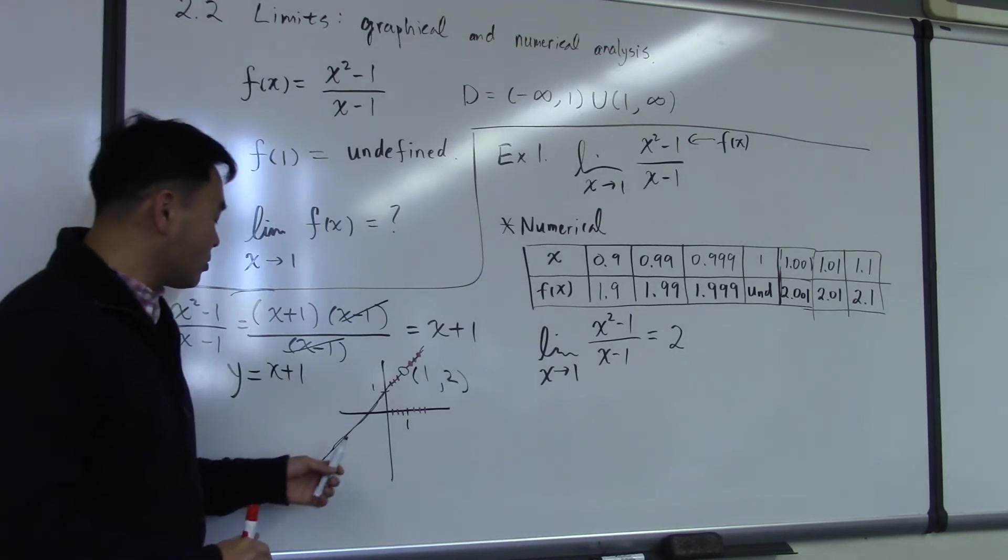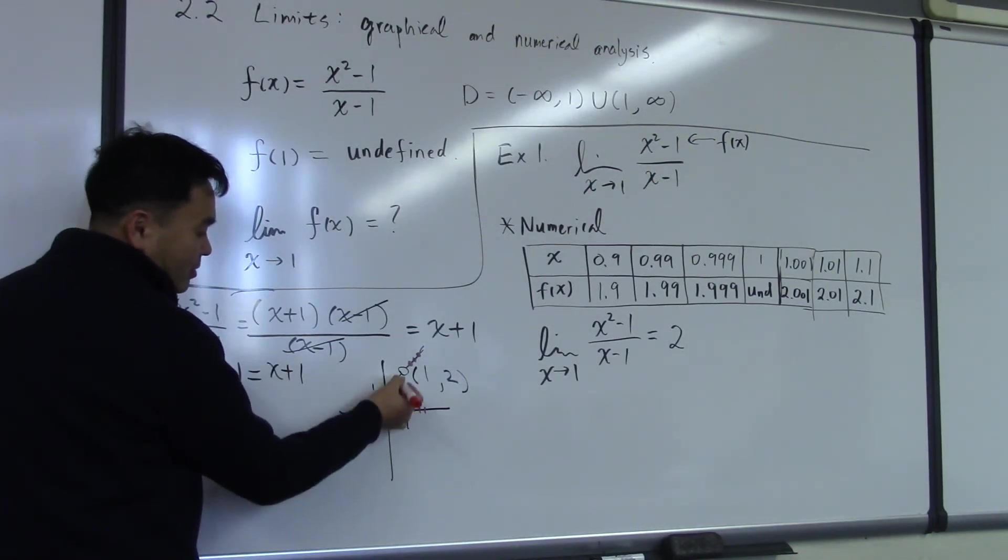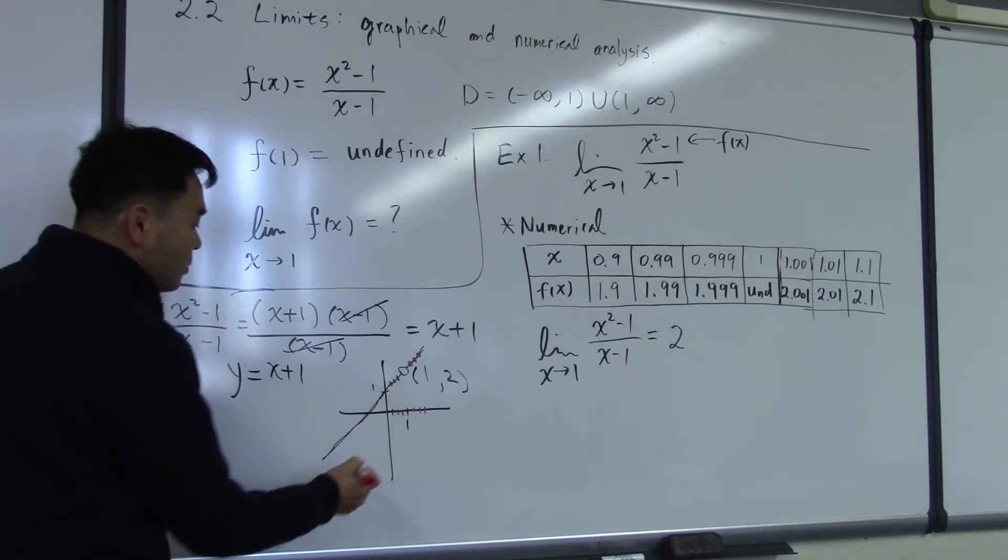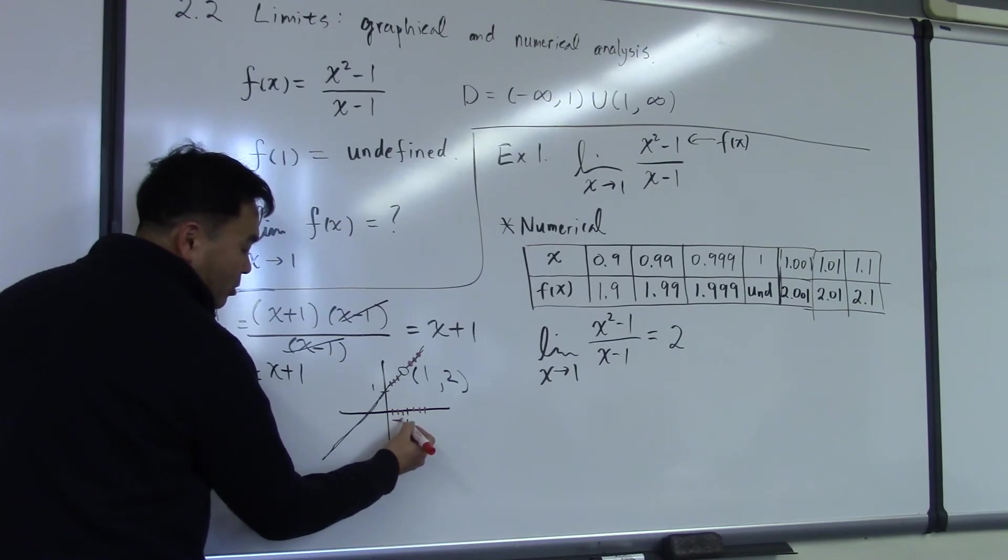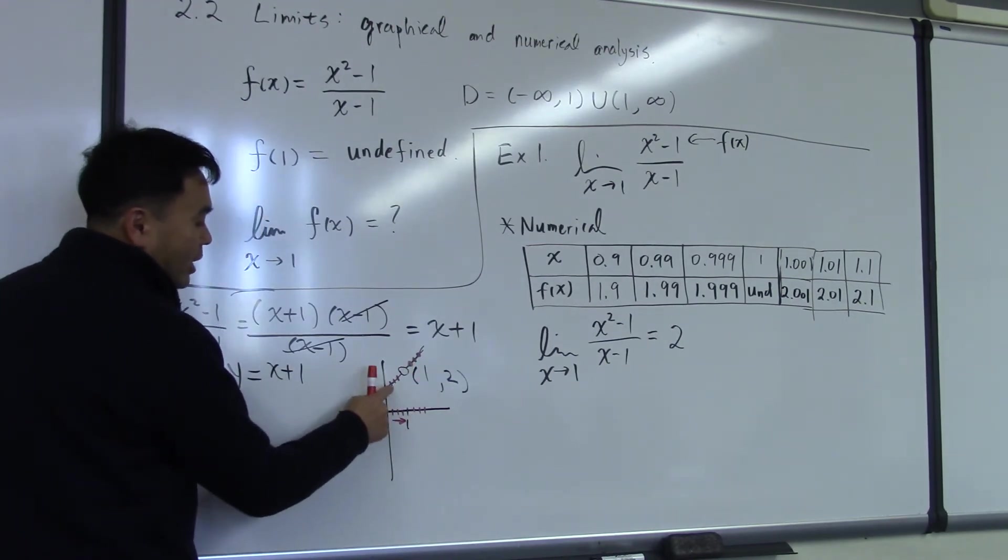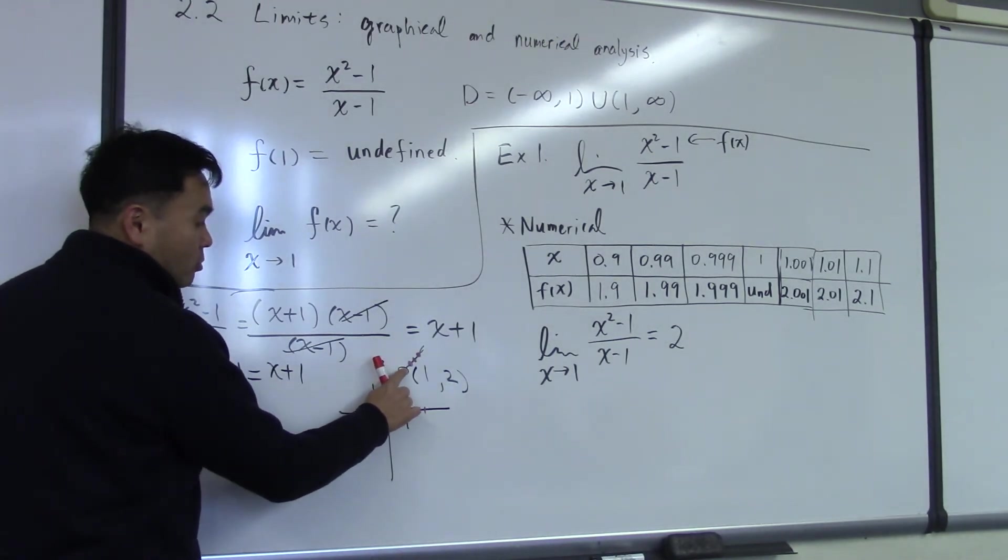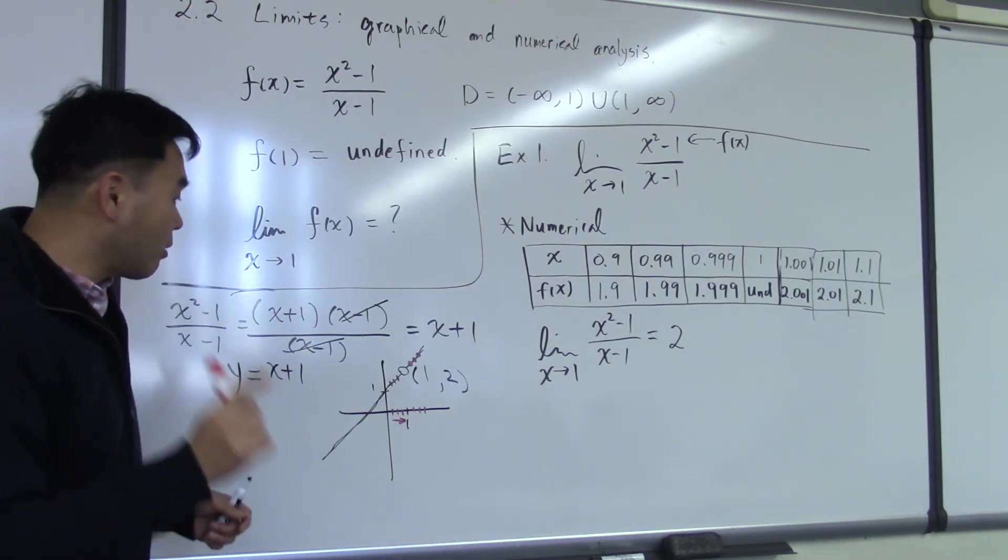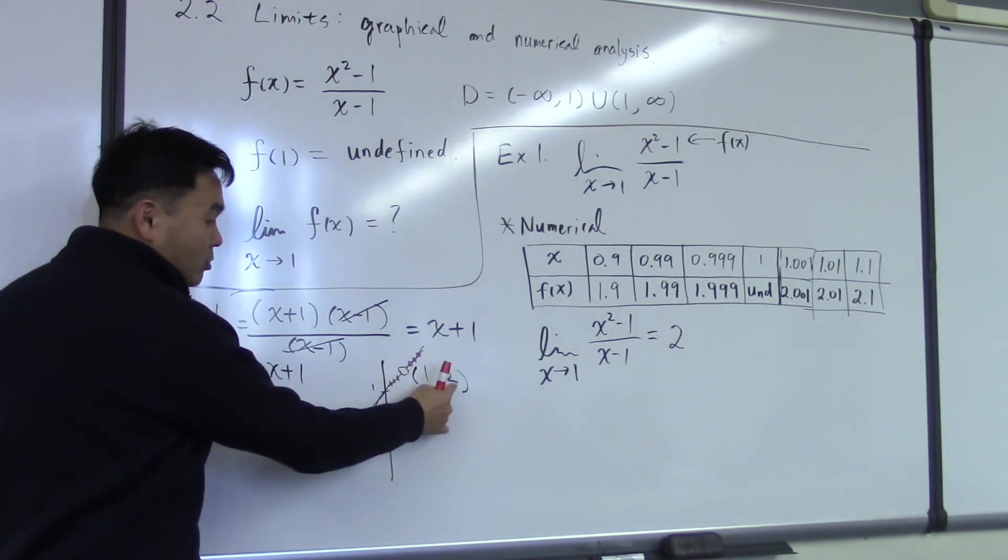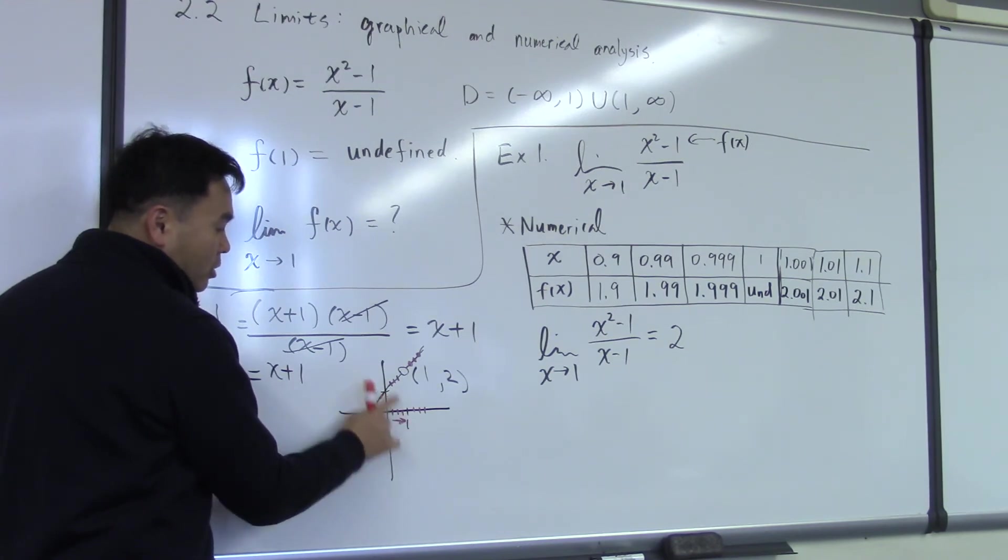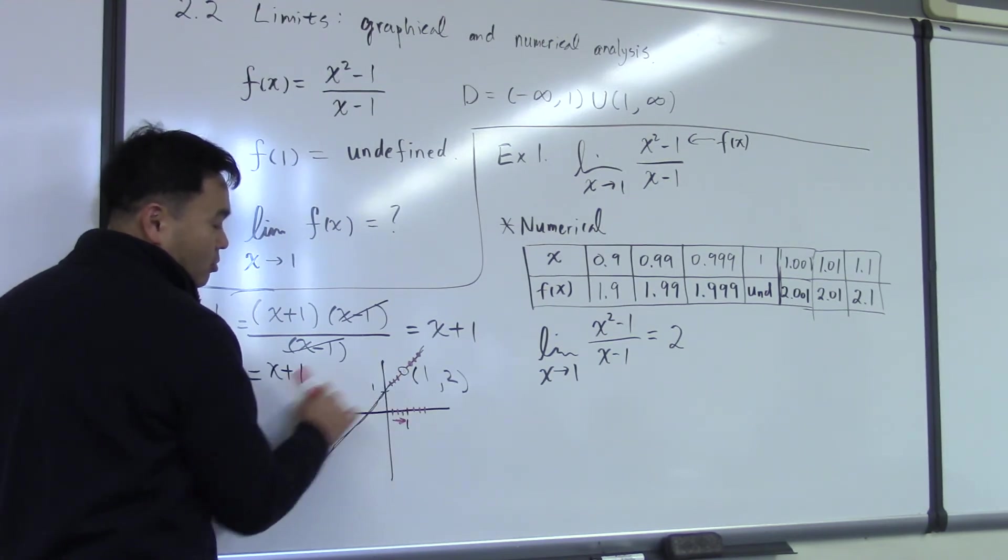The y values correspond to the height of these points that I plotted, right? And as you can see, if your x values get closer and closer from the left side, what happens to the y values? It goes up closer and closer to 2. The height of this open circle is 2. So as you go, as x goes closer and closer to 1, the y value, the height, gets closer and closer to 2.